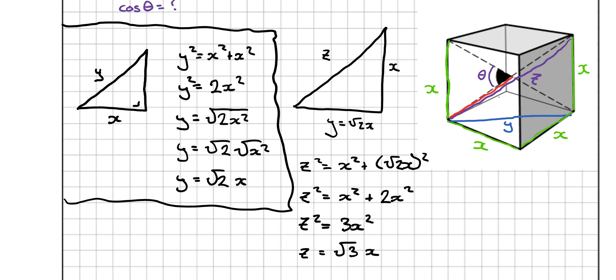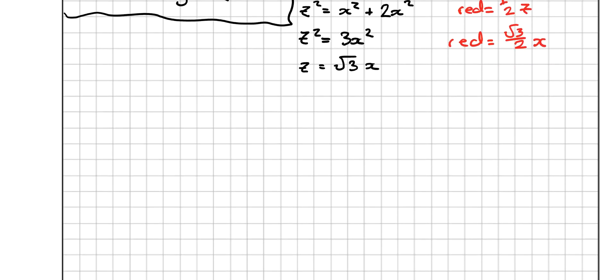So what's the red length then? Well, the red length, red is equal to a half of z. Red is equal to, multiply this by a half, root 3 over 2x. And that's also root 3 over 2x, root 3 over 2x. So now what do we have? We have a triangle with one length being x. These are two red lengths, root 3 over 2x, root 3 over 2x. And I want to find that angle here, θ.